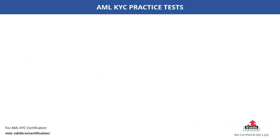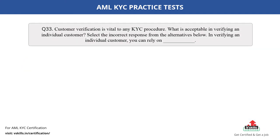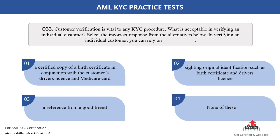Question number 33. Customer verification is vital to any KYC procedure. What is acceptable in verifying an individual customer? Select the incorrect response from the alternatives below. In verifying an individual customer, you can rely on dash. Fill in the blank. The options are: A. A certified copy of a birth certificate in conjunction with the customer's driver's license and Medicare card; B. Citing original identification such as birth certificate and driver's license; C. A reference from a good friend; D. None of these. The correct answer is option C.